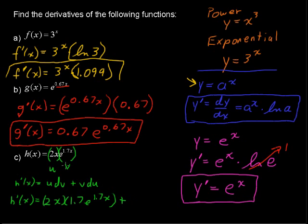And then plus what we have left is v. So e to the 1.7x multiplied by the derivative of the u function of 2x. And the derivative of 2x is just 2.